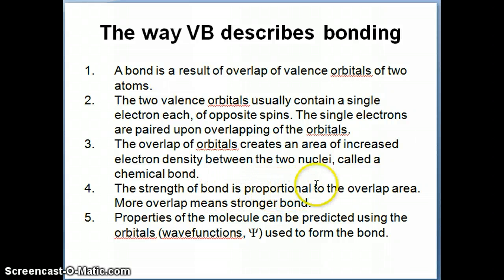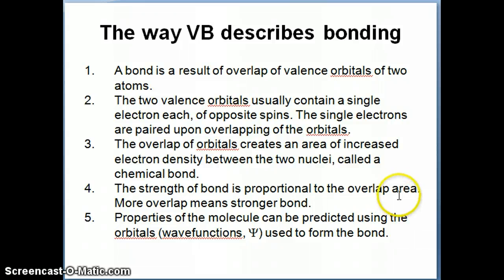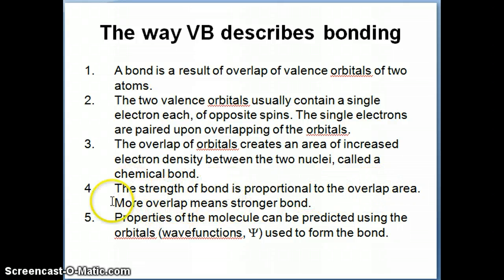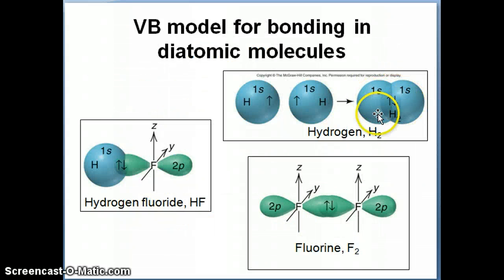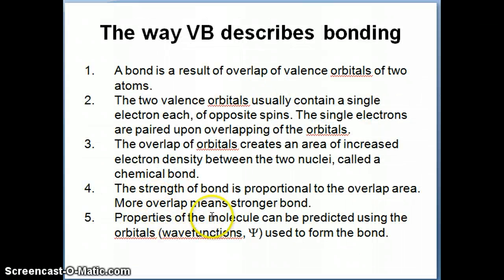The strength of this bond is proportional to the overlap area. When I talk about calculation, I mean that you have the wave function for these atomic orbitals, and then you can make calculations about how much of that orbital is overlapping with the other orbital. At our level we can't do these calculations, but it is possible to do so. The more overlap you have between the two orbitals, the stronger your bond would be predicted to be.